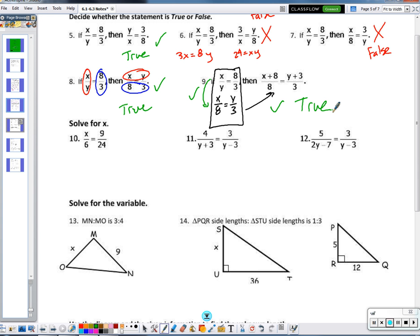Remember that syllogism property back in chapter 2? If I know A is true to B and B is true to C, then I can say that A is true to C. I can follow that same pattern all the way through. So number 9 is true. 10, 11, 12. Not very difficult types of problems, but all we're going to do is solve the proportion. To solve, we're going to use that cross-product property.